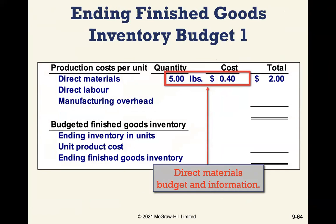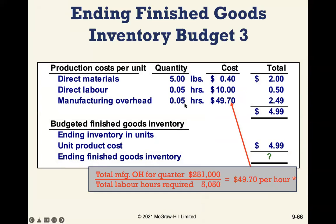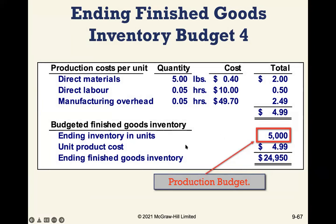We can now calculate the unit product cost. Direct materials: $0.40 per pound × 5 pounds = $2.00 per unit. Direct labor: 0.05 hours × $10 per hour = $0.50 per unit. Manufacturing overhead: 0.05 hours × $49.70 per hour = $2.485 per unit. Total unit product cost is approximately $4.99. Based on that, we can determine the finished goods inventory value using the ending inventory from the production budget.